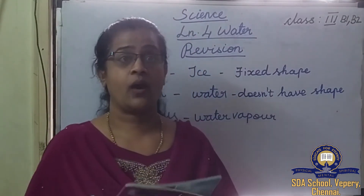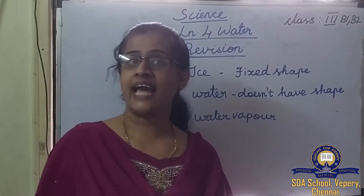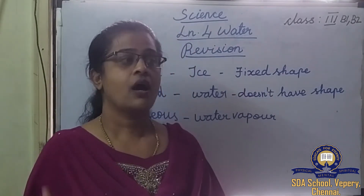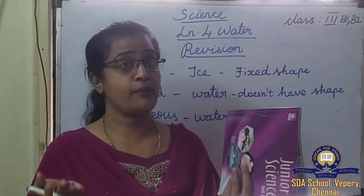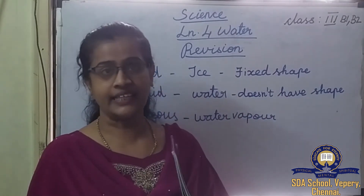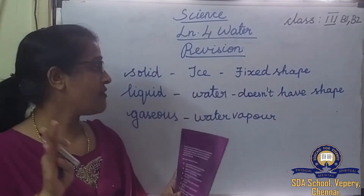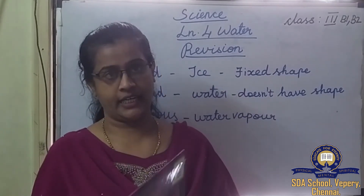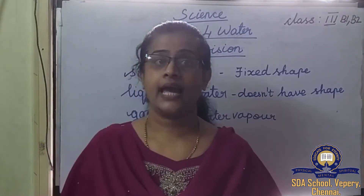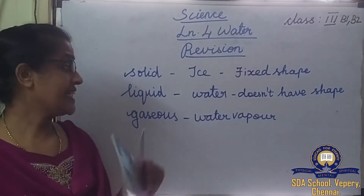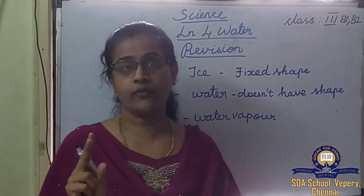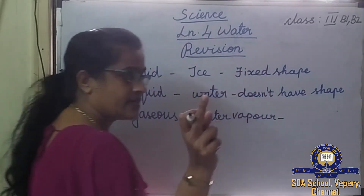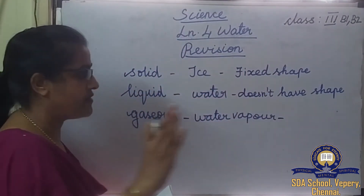Liquids do not have a shape of their own, but they take the shape of the container. When water is poured into a glass or a jar, it takes the shape of that container. So solids have fixed shapes, and liquids take the shape of the container. Water vapor is a gas and it also does not have any shape. Only solids have fixed shapes; liquids and gases do not.